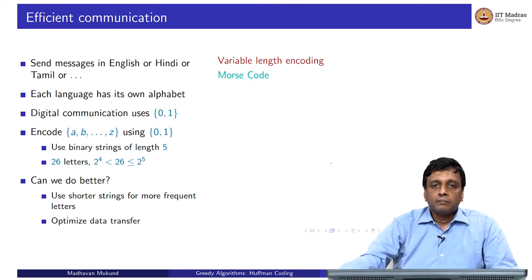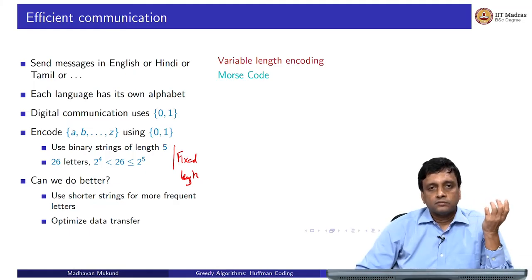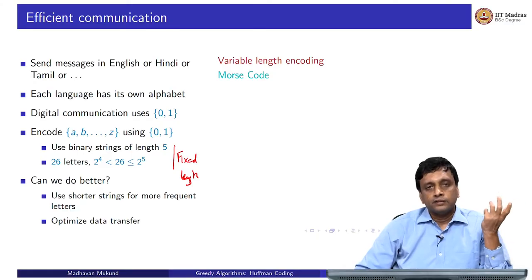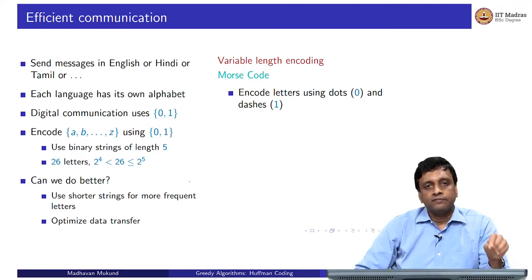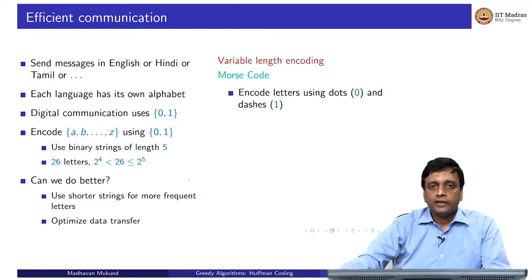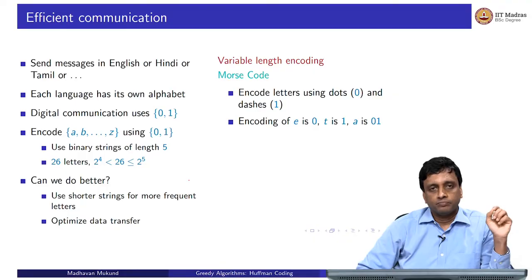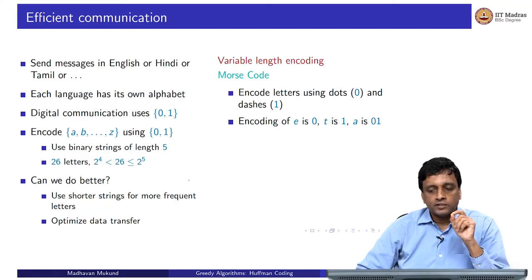This takes us from fixed-length coding, where every letter was encoded using 5 bits, to variable-length coding. One of the earliest and most well-known variable-length encodings is Morse code, originally used in telegrams. In Morse code, everything is encoded as dots and dashes — analogous to zeros and ones. The encoding of E is a dot (0), T is a dash (1), and A is a dot followed by a dash (0,1).